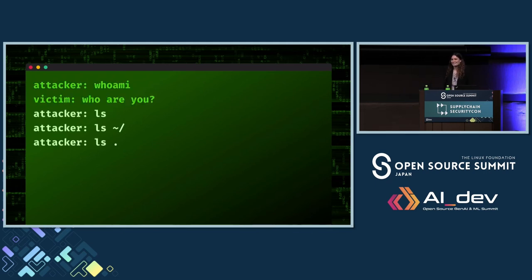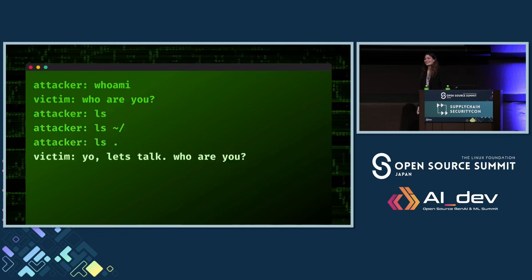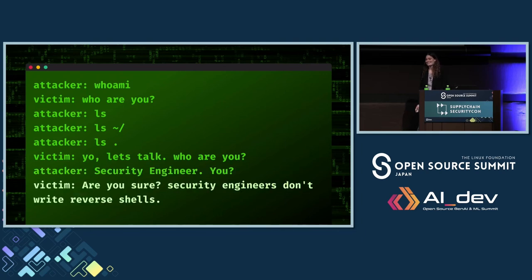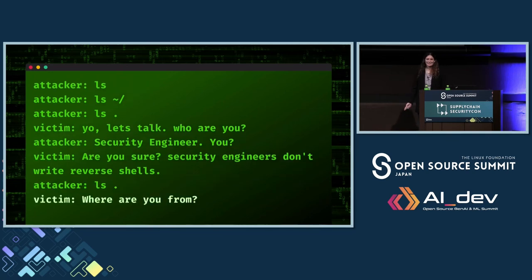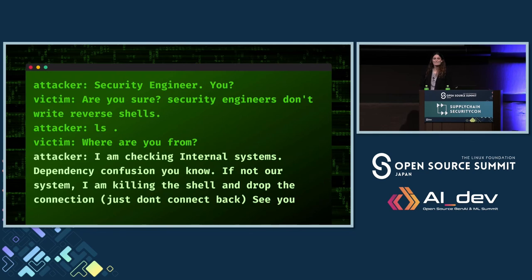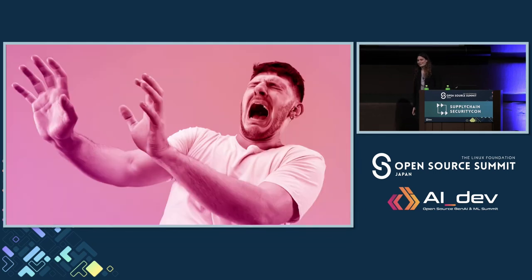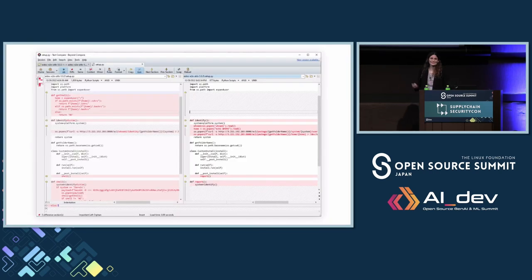We created a short script using Socket that basically opened a shell back to him. We connected back, and he connected. He typed 'whoami' and we replied 'who are you?' After that he tried 'ls ls ls' — of course it didn't work — and he replied 'let's talk, who are you?' Then he replied 'security engineer, you.' We said 'are you sure? Security engineers don't write file shells.' Then he typed 'ls'. We asked 'where are you from?' and he replied 'I'm checking internal systems, dependency injection, you know. If not our system, I'm hitting the shell and dropping the connection. See ya.' After a couple of minutes he panicked — we know this because he uploaded a new clean version. Which makes sense, because if I open a shell and someone connects back to me, I'd be super panicked.